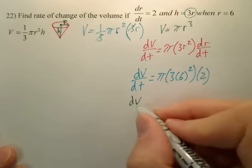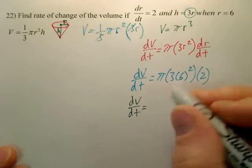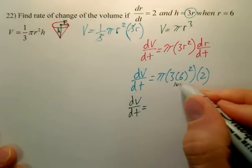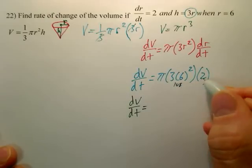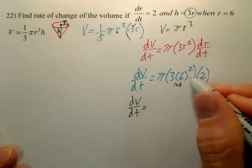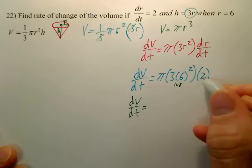Which 3 times 36 is 108. Okay? So dV/dt is equal to, this is 108, 108 times 2 is... wait, is this 108 right here? Times 2, 108 times 2 is 216.